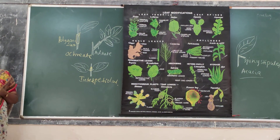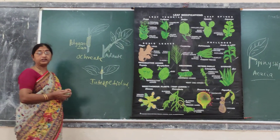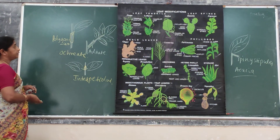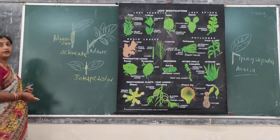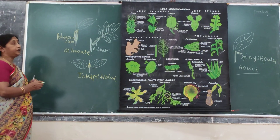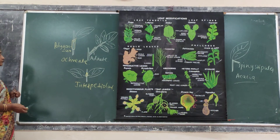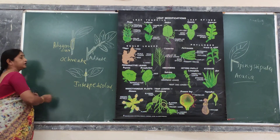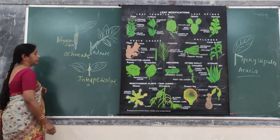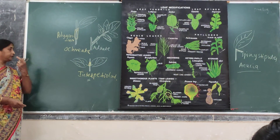Stipules are of different types. They may be leafy — if they are leafy, they are called foliaceous stipules. If they are in the form of tendril-like structures, they are called tendril stipules. In some cases, they adhere to the petiole of the leaf — such stipules are called adnate stipules. And in some cases, the stipules are found in between two leaves — such stipules are called interpetiolate stipules.